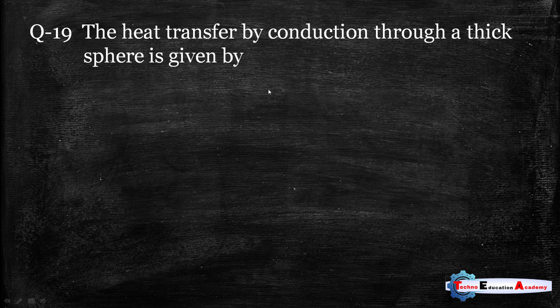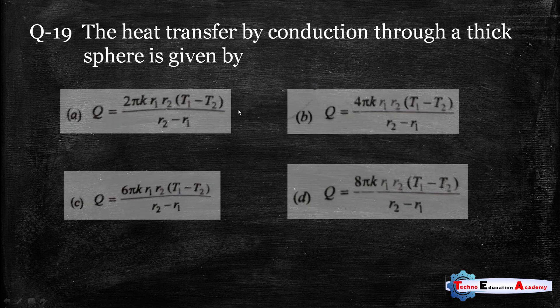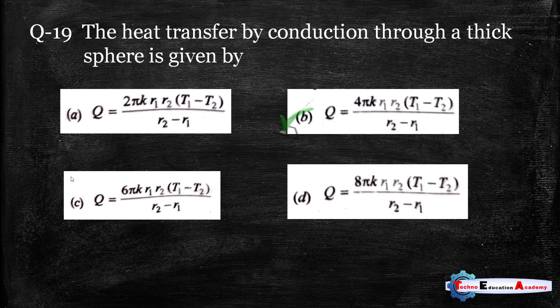Question number nineteen: the heat transfer by conduction through a thick sphere is given by Q = 4πk·r1·r2·(T1 − T2) / (r2 − r1). The correct answer is option B.